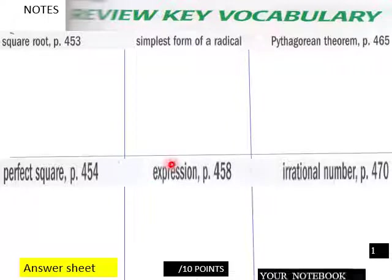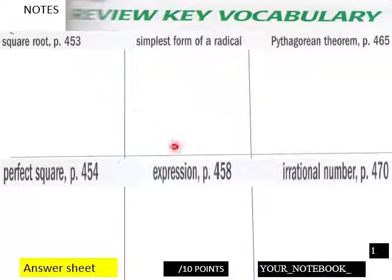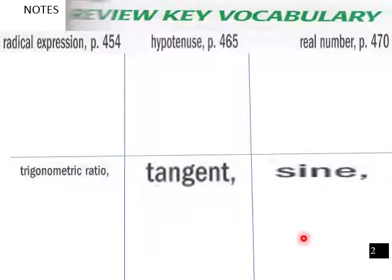On to vocabulary here, students. This goes into your notebook: square root, simplest form of a radical, Pythagorean theorem, define this perfect square expression, and then irrational number. Go back into your notes, students, if you need to. Teachers, give your students time to come up with this or ask them to come forward to the smart board to write down their definitions of these key vocabulary words. Ten points here for page one.